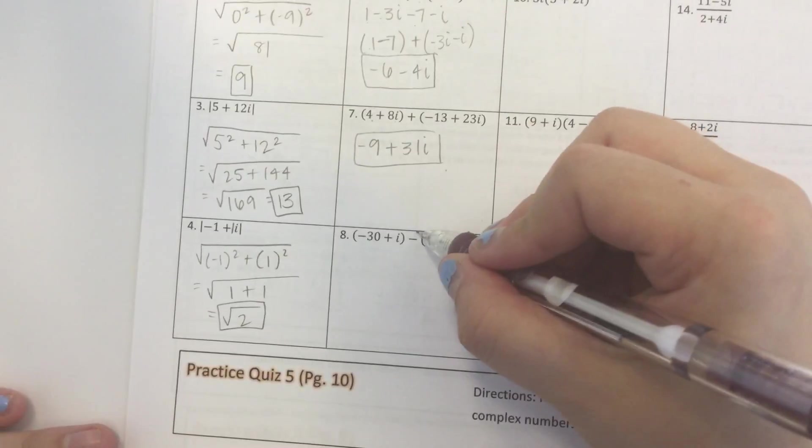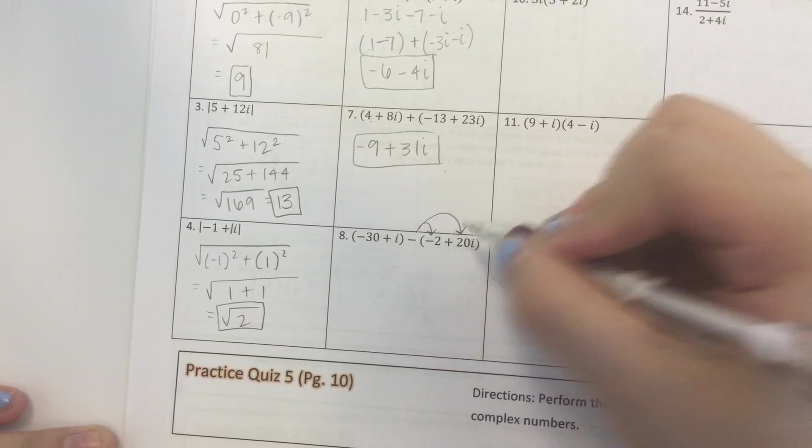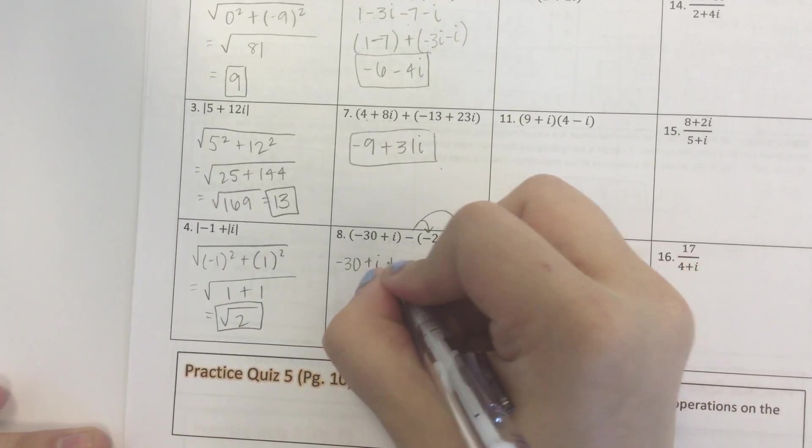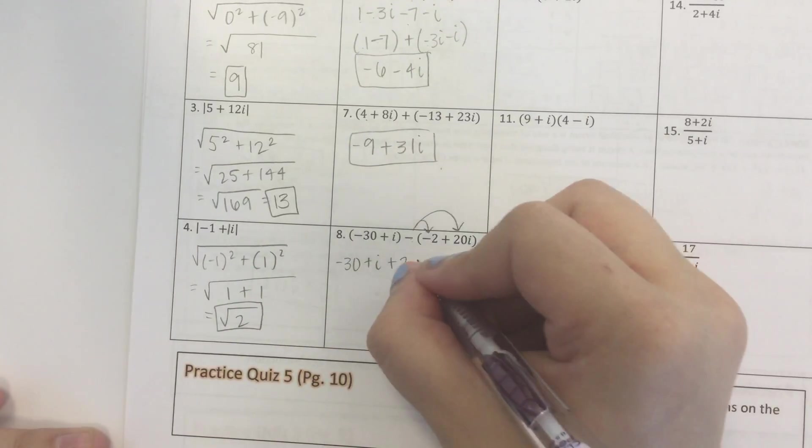This last one is a subtraction, so we're going to distribute. Negative 30 plus i minus negative 2 makes that a plus 2, minus 20i.